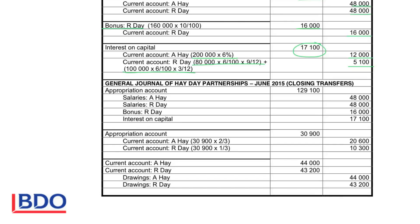The first entries we completed — salaries, bonus, and interest — are our adjustments. We debited the expense account every time to increase expenses and credited the current account to show that the business owes the money to the partners. Then we do the closing transfers, taking all the expenses in connection with the partners to the appropriation account by debiting it to close off all these expenses. Expenses have debit balances, so we credit all those accounts with that figure.